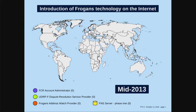And then you see this yellow FNS server element, which is the implementation of the addressing system by the FCR administrator. They're in charge of operating the server for OP3FT. In mid-2013, we started having some tools and a time schedule. We were talking about introducing the technology to different brands, and we started with a team of legal experts.